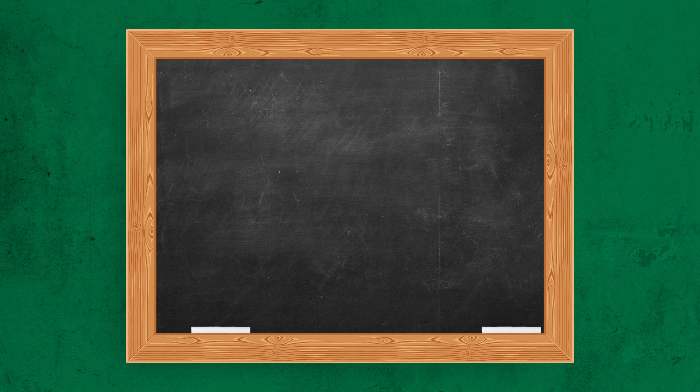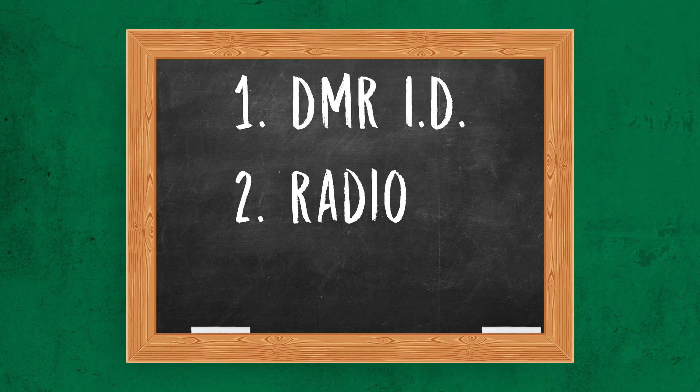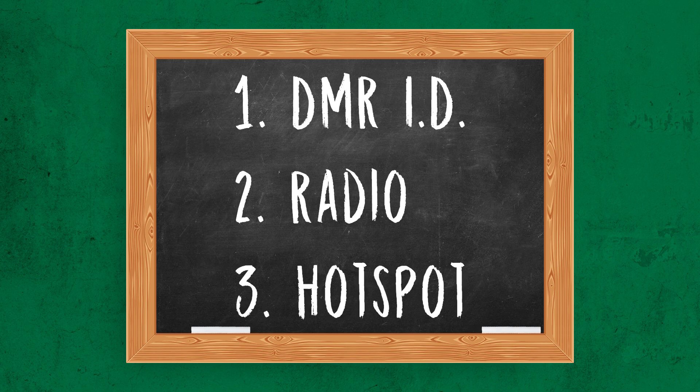To go over what we've talked about so far: to get on DMR you need to have a unique DMR ID from radioid.net. Once you have that, you'll need a radio to communicate with a hotspot to connect your radio to the internet. Not so bad, right?